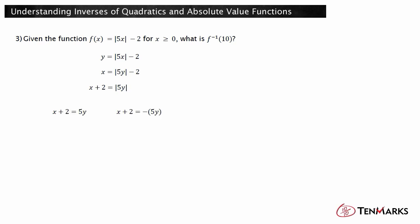In this case, the two equations are x plus 2 equals 5y, and x plus 2 equals negative 5y. The domain of f of x is restricted to x greater than or equal to 0. Since in the inverse the domain and range are switched, the range of the inverse will be y greater than or equal to 0. Therefore, only the case x plus 2 equals 5y is valid. Divide both sides by 5: x plus 2 divided by 5 equals y. So the inverse is f inverse of x equals x plus 2 divided by 5. Substitute 10 into the inverse to determine f inverse of 10: 10 plus 2 over 5 is 12 over 5, which is 2.4. So the answer is 2.4.